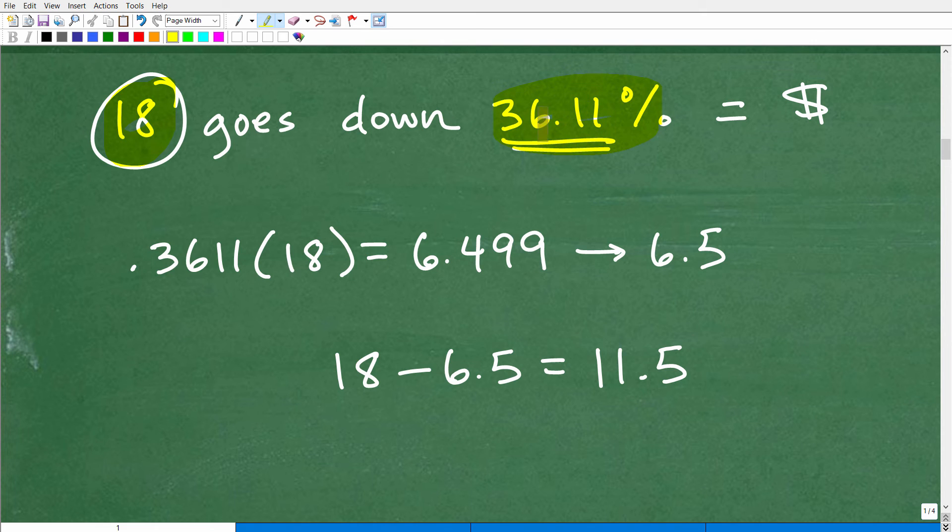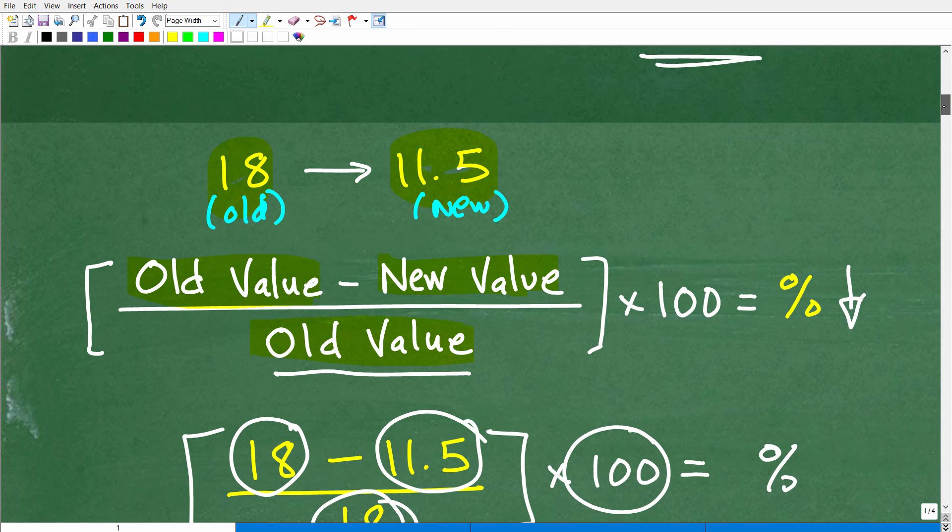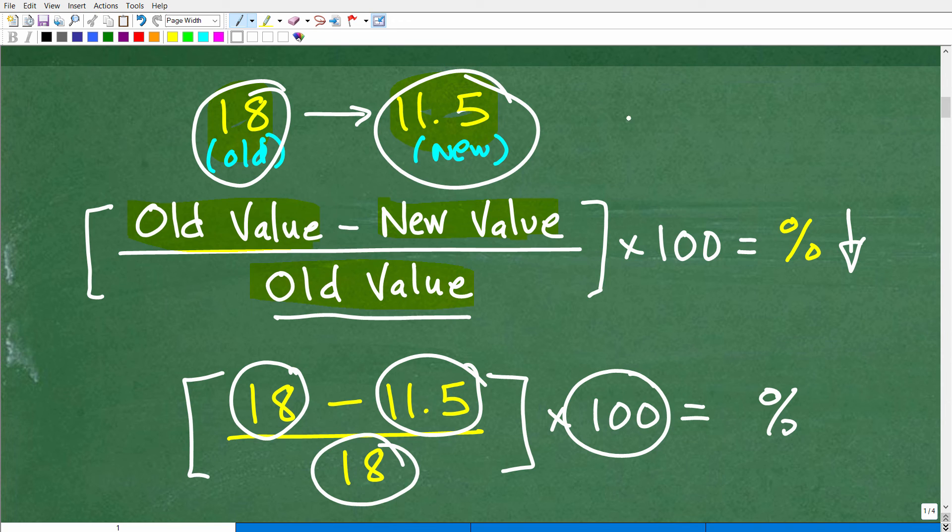We're going to take this percent, convert it to a decimal by moving the decimal point two places to the left. So that's going to be 0.3611. That's the decimal equivalent of 36.11%. We'll take that and multiply it by 18, and we're going to get 6.4999. We're going to go ahead and round this up to 6.5. So if your employer is saying, hey, we're going to drop your pay down 36.11%, they're going to drop it down by $6.50. This is the amount they're dropping it by. So your new pay would be 18 minus that decrease, that 36.11% decrease which is 6.5. Now that leaves us to 11.5, and of course that's what we had in our original problem up here. Here was our old and it went down to 11.5, which was that 6.5 drop or that 36.11%.